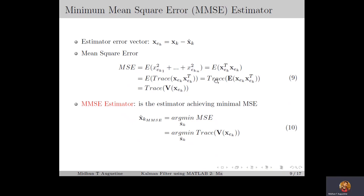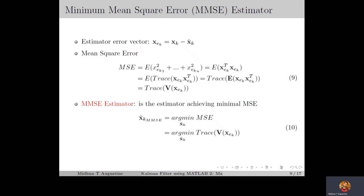The trace of a matrix is the sum of its diagonal elements. So the trace of XEK times XEK transpose equals the trace of the expected value of XEK times XEK transpose, and the expected value of XEK times XEK transpose equals the variance of XEK. So the mean square error equals the trace of the variance of XEK. In the MMSE estimator we compute an estimate of the state that results in minimal mean square error. The Kalman estimators fall under the class of MMSE estimators, and this approach will be used in the derivation discussed in upcoming lectures.